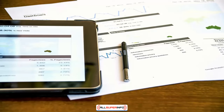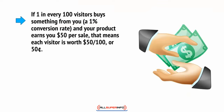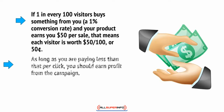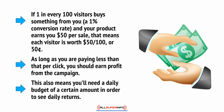The great thing about this system is it means you can actually guarantee ROI for your business. You do this by calculating how much it's going to cost you to bring each new visitor to your site, which will be equal to your CPC or cost per click. You then look at your conversion rate — in other words, what percentage of new visitors become paying customers — and compare these numbers. So if one in every 100 visitors buys something from you, a 1% conversion rate, and your product earns you $50 per sale, that means each visitor is worth $50 divided by 100, or 50 cents. As long as you're paying less than that per click, you should earn profit from the campaign. This also means you'll need a daily budget of a certain amount in order to see daily returns.